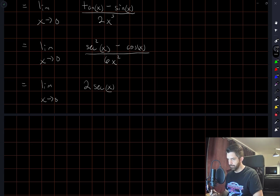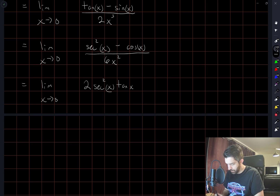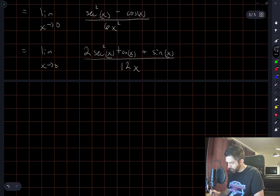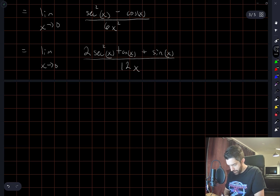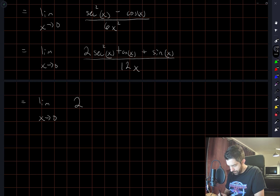The derivative of secant is secant tan. So applying L'Hôpital's rule: we get 2 sec²x tan x plus sin x, divided by 12x. We're still in a 0 over 0 form when we substitute 0. So let's go one more derivative. The derivative of sec²x is 2 sec²x tan x.